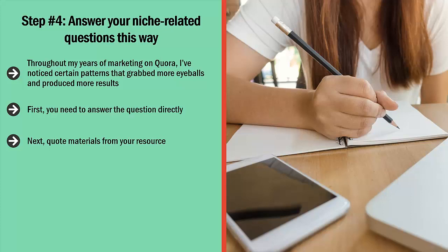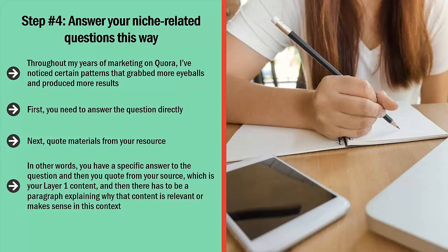Next, quote materials from your resource. If you're going to be dropping a link to your Layer 1 content, quote a block of text from that content and explain why it is relevant. In other words, you give a specific answer to the question, then you quote from your Layer 1 content, and then there has to be a paragraph explaining why that content is relevant or makes sense in this context. After you've done that, include a link to your Layer 1 or Layer 2 content and claim that this is your source. If you do this right, you're not going to get banned, and people who read your answer are more likely to click through.